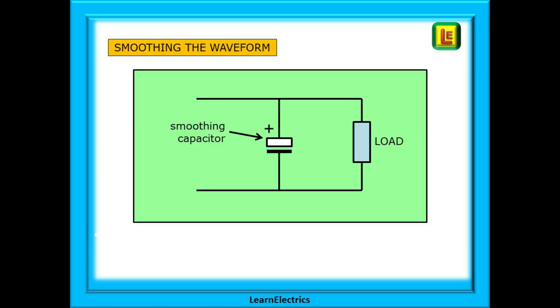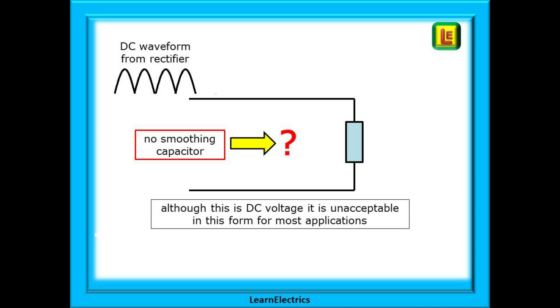We now want to smooth this very lumpy DC waveform and this is a very basic capacitor and load arrangement. If there was no smoothing capacitor installed the DC waveform from the rectifier circuit would remain in its raw state, what we have just called lumpy, and although this is DC voltage it is unacceptable in this form for many applications.